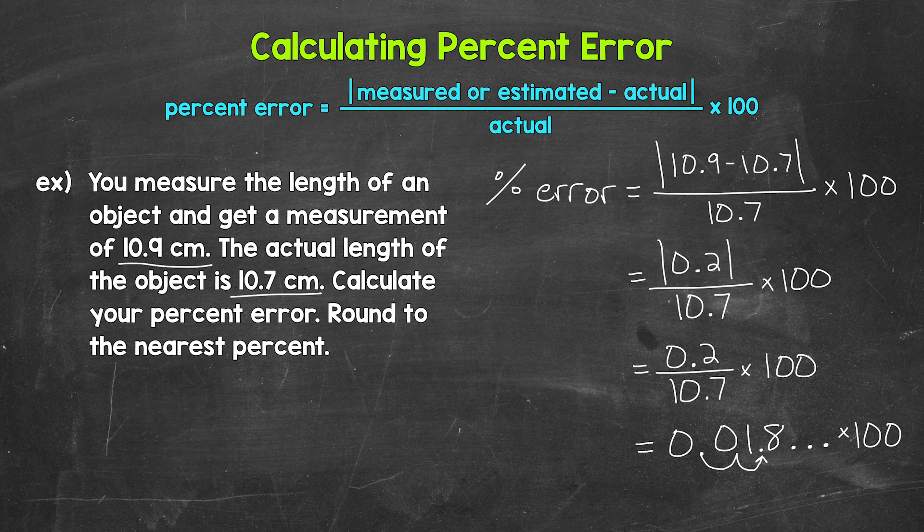That gives us 1.8 and that decimal continues on. So let's round to the nearest percent. And when we round to the nearest percent, we round to the ones place. We have a one in the ones place with an eight to the right in the tenths. So this rounds to two percent.